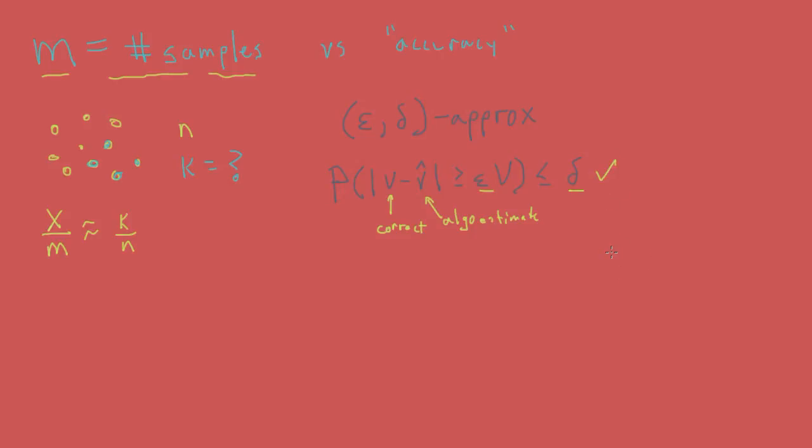Therefore, under this formulation, an algorithm is a good approximation algorithm when the probability that it produces a large error, as given by epsilon, is smaller than some probability given by delta.